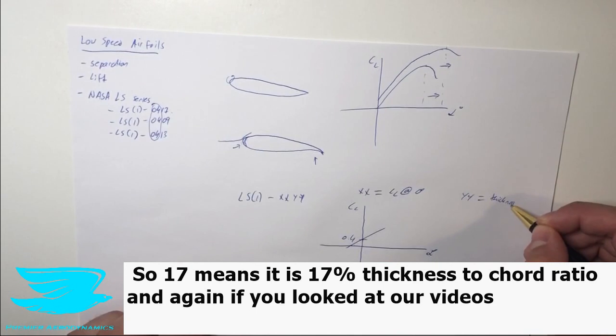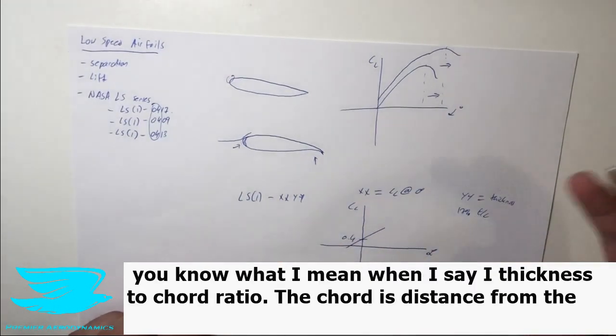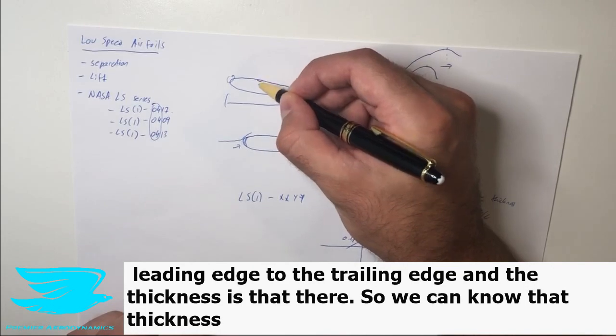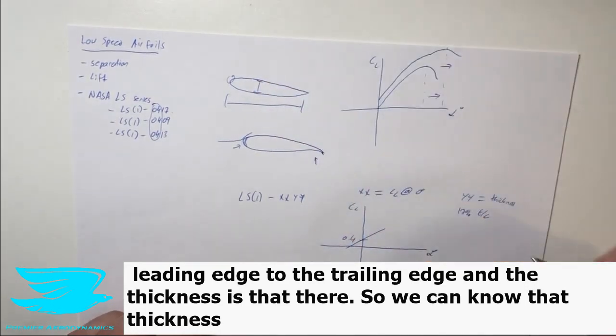of the airfoil. So 17 means it is 17 percent thickness to chord ratio. And again, if you've looked at those videos, you know what I mean when I say thickness to chord ratio. The chord is this distance from the leading edge to the trailing edge, and the thickness is that there.